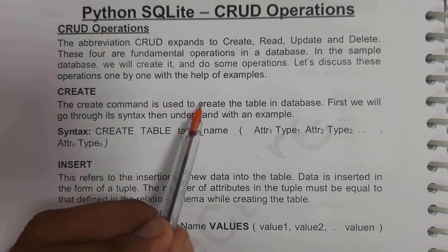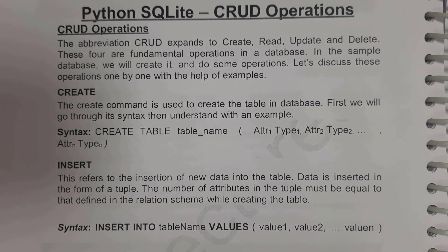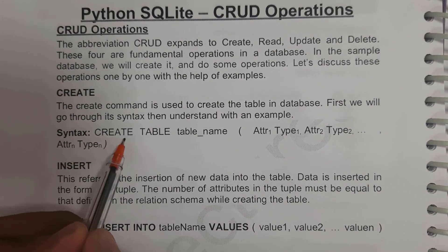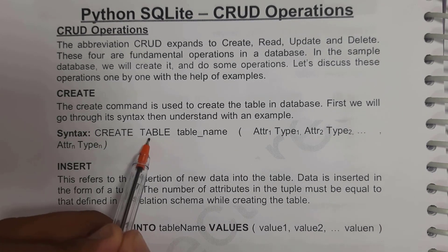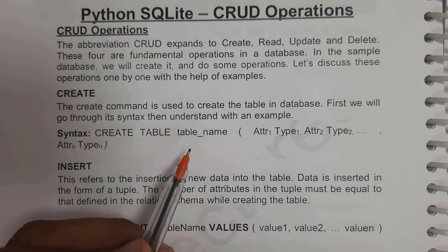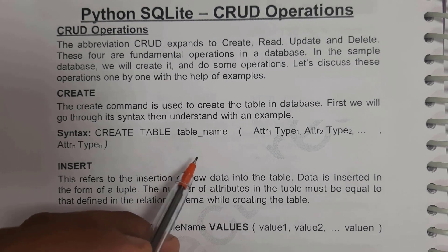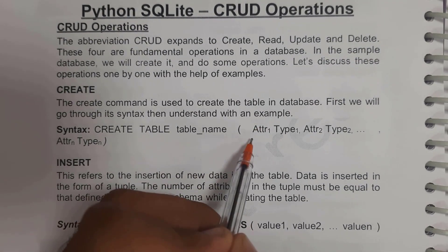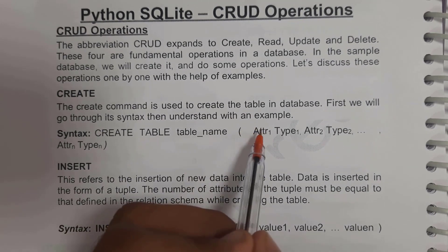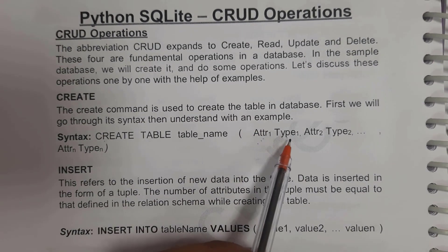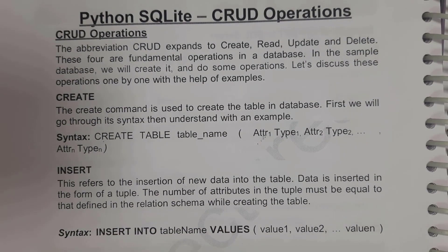The CREATE command is used to create a table in the database. This is the syntax in order to create a table: first you write the CREATE command, then TABLE, then give the table name. For example, if you want to give the table name as students, you write students; if you want to give table name as employee, you write employee. Inside brackets you write the attribute and type — attribute is the column name and type is the data type.